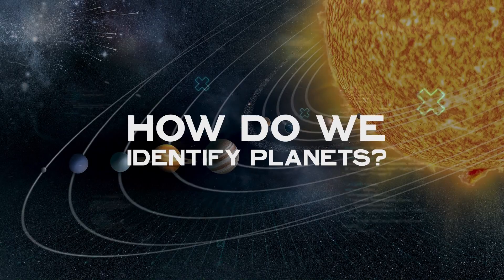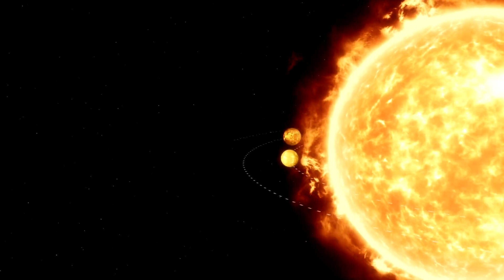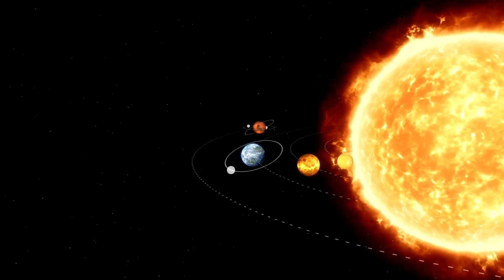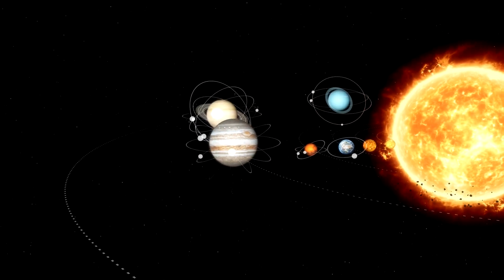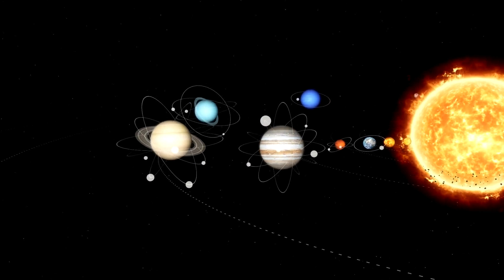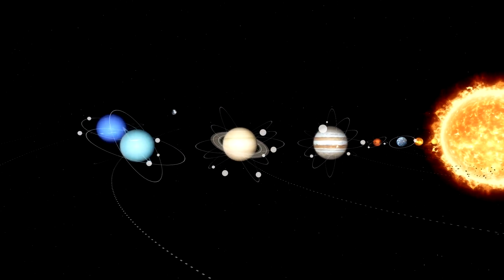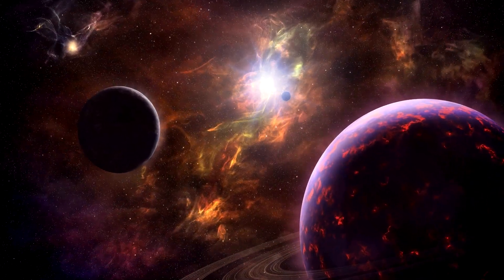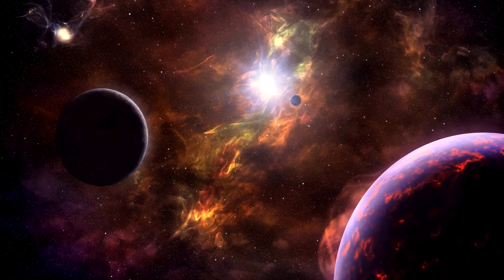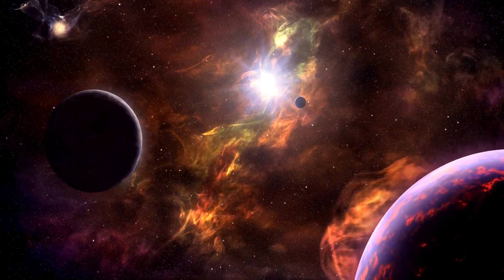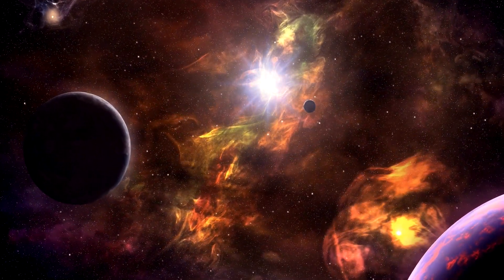How do we identify planets? Before we get into the list, it's worthwhile to understand just how scientists manage to detect planets that reside thousands of light years away. There are a few different ways to identify planets, but the two most commonly used are the transit method and the wobble method.